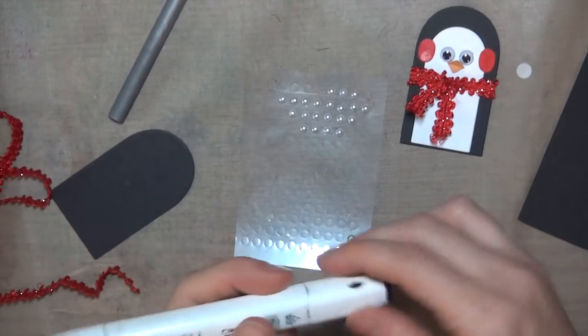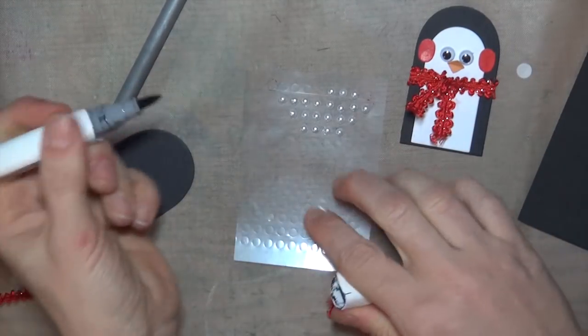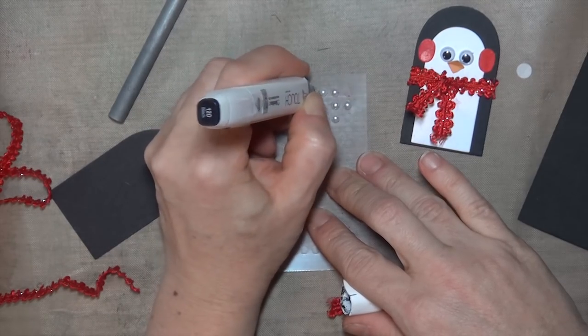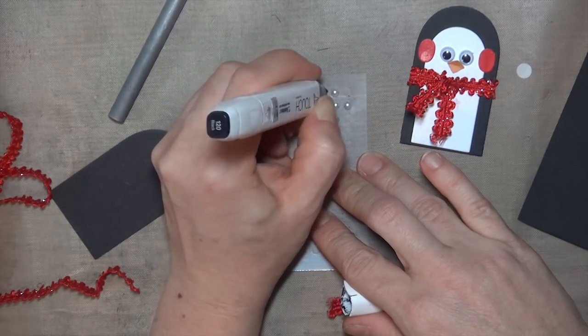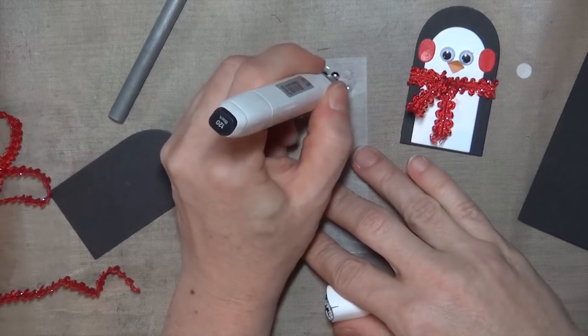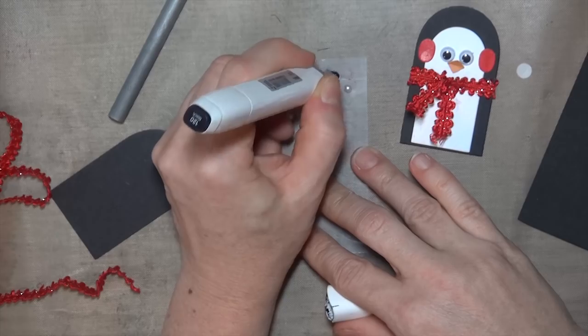In the photo tutorial she uses candy dots for buttons down the penguin's little front, but I don't have those, so I just used some adhesive pearls and colored them black with an alcohol marker. This is a really great way to customize your embellishments to your projects, just buy white pearls and color them to match.